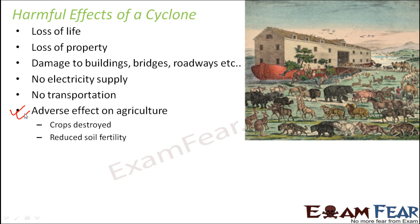Beyond transportation and electricity, cyclones have an adverse effect on agriculture. Although crops need rain, excessive water logging destroys them. Furthermore, when floods occur, soil fertility is adversely reduced, and even after the cyclone has passed, the reduced fertility affects agriculture for future months or even years to come.